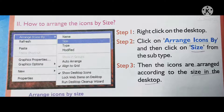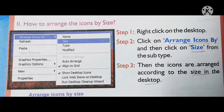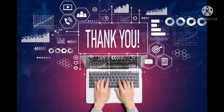To arrange icons by size: right-click on the desktop, then click Arrange Icons By; the sub-menu will be displayed. Click Size from the sub-menu, and the icons will be arranged according to size on the desktop. Now you understand how to arrange icons by name as well as size.